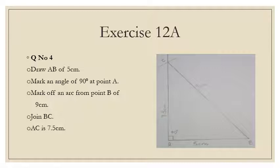In third step, we will adjust our compass of 9 cm and fix its pointed end at point B and mark off an arc of 9 cm at line AK.